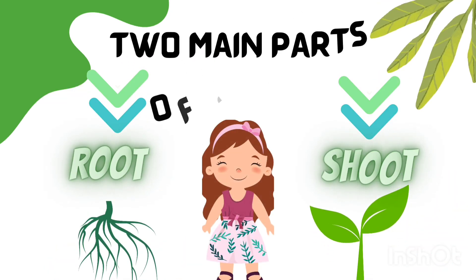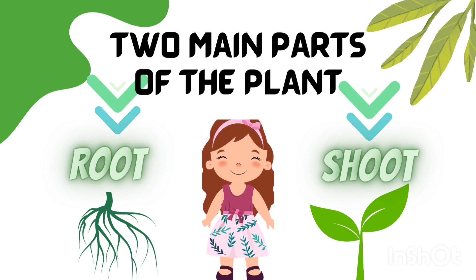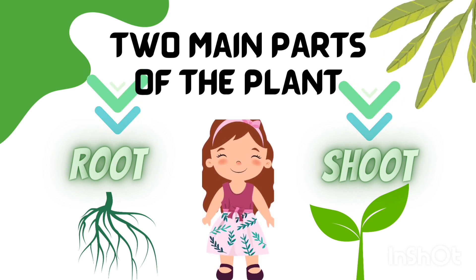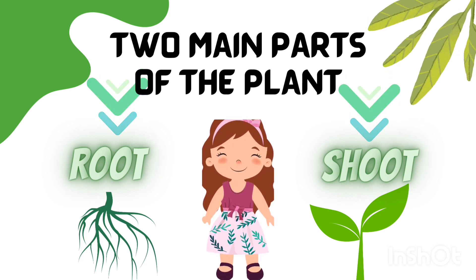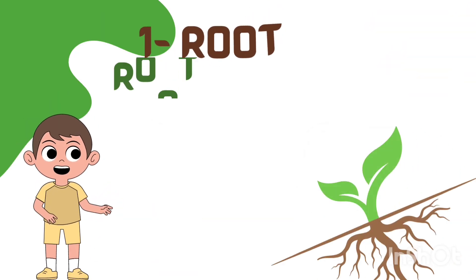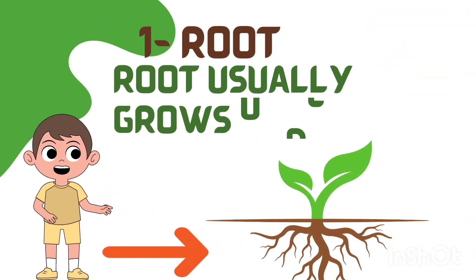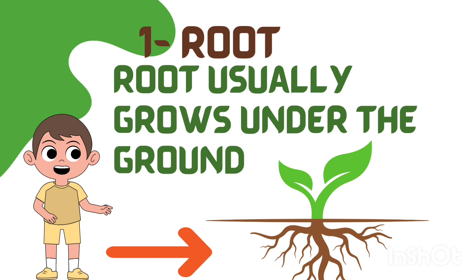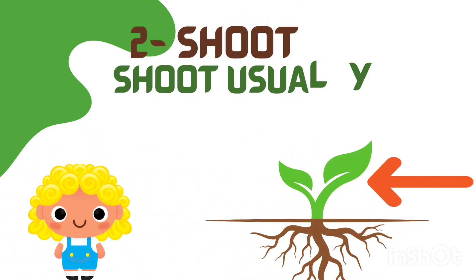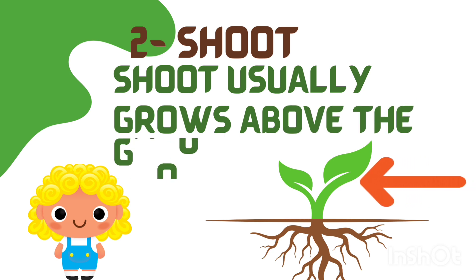The two main parts of the plant are root and shoot. First, root. Root usually grows under the ground. Second, shoot. Shoot usually grows above the ground.